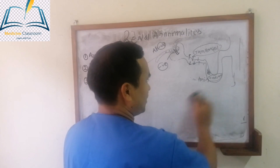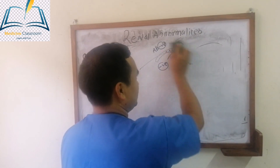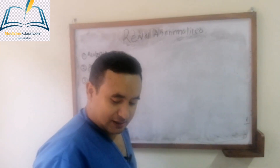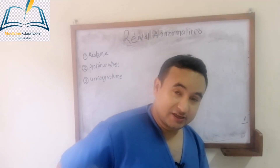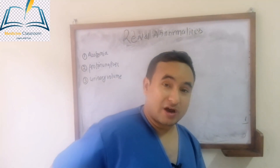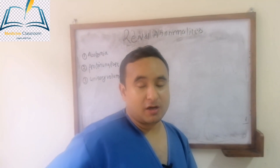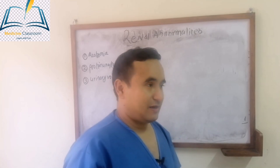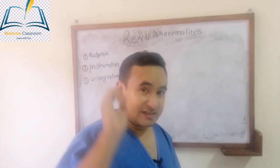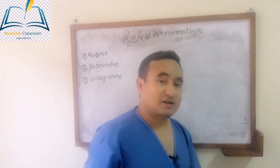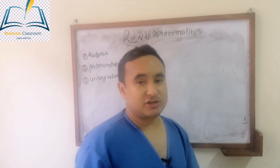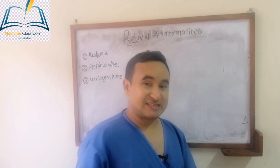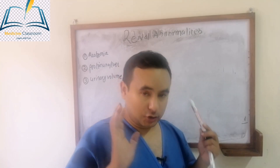The normal protein excreted in the urine is less than 150 milligrams per 24 hours, and normal albumin is less than 30 milligrams per 24 hours. That is the normal protein or albumin excreted in the urine.